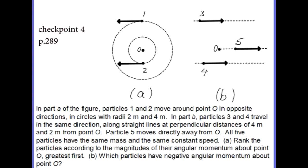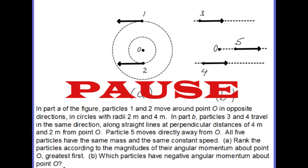Let's look at this sample problem. Read the description of the problem and try to answer these questions. Rank the particles according to the magnitudes of their angular momentum about point O, greatest first. And then, which particles have negative angular momentum about point O? Pause the video here and see if you can answer these questions. And then come back and check your answers on the next slide.